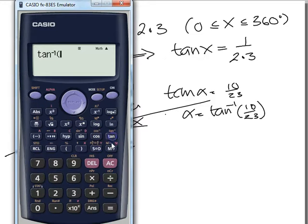Shift tan, 10 over 23. Now we can round 23.450. Agreed? 23.50.